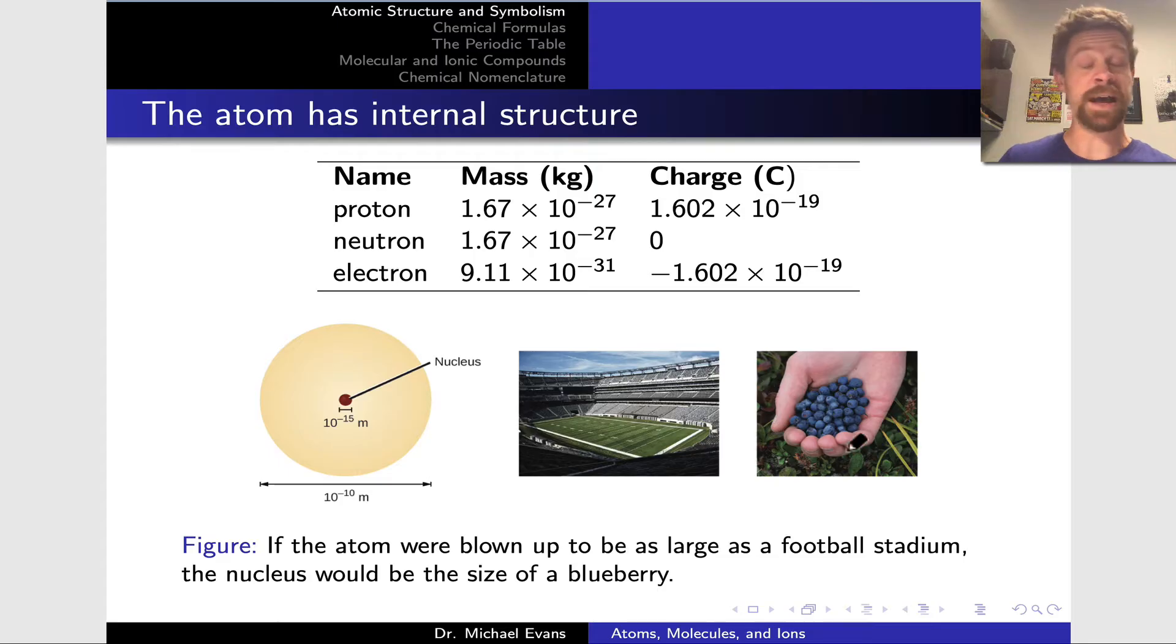One point to make right off the bat is that the nucleus is extremely small. If we imagine that the atom was the size of a football stadium, the nucleus would be at the center and would be about the size of a blueberry. Amazingly small, considering the size of the atom as a whole. This makes the point that atoms are mostly empty space. It's electrostatic attraction and repulsion that forms the space-taking-up properties of the atom. Most of it is empty space filled with electron clouds with a very small nucleus at the center.